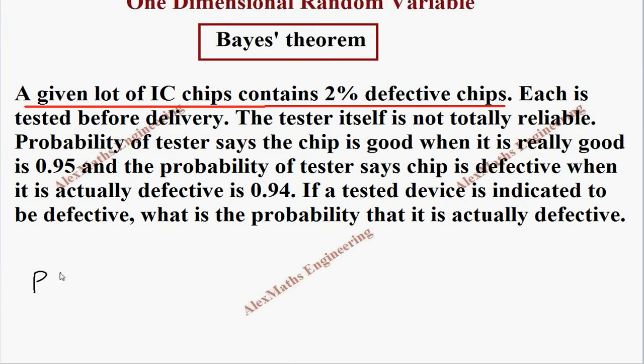P of D is 2 by 100, which means the probability of defective chips is 2 by 100. Then not defective, P of D dash, is 98 by 100.